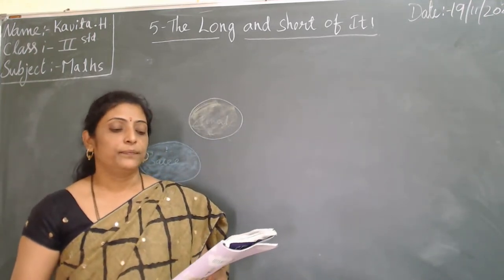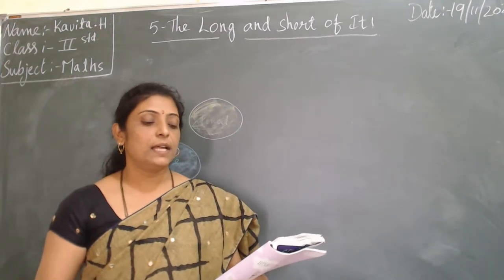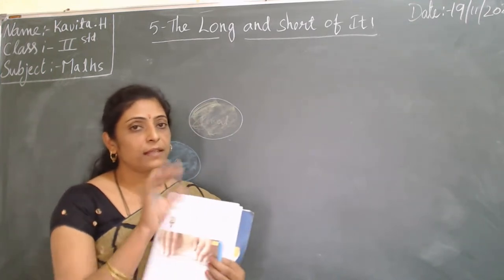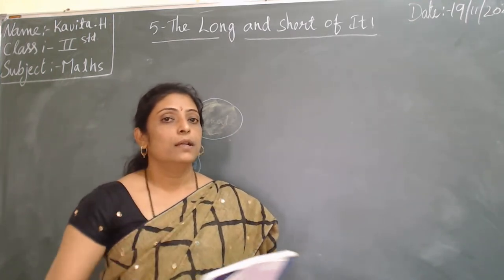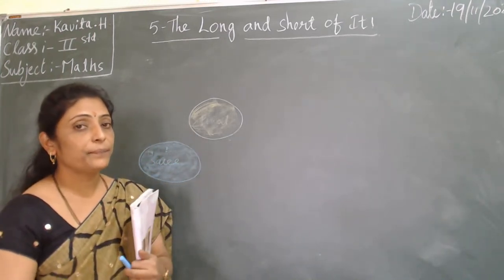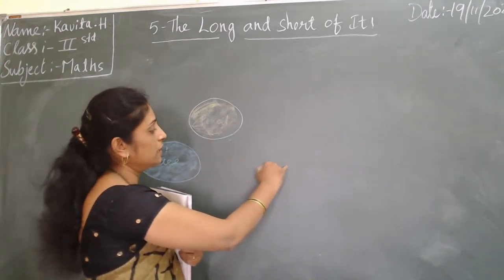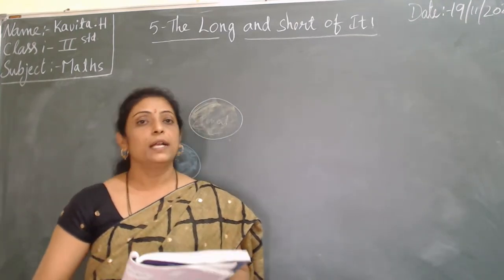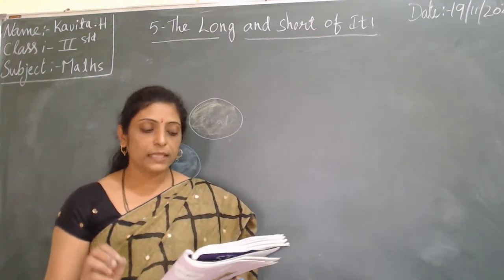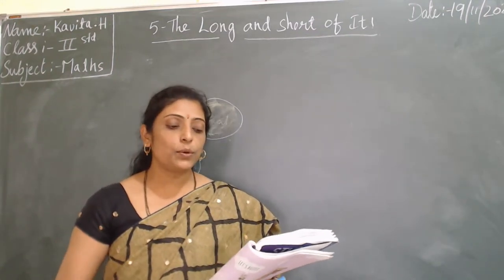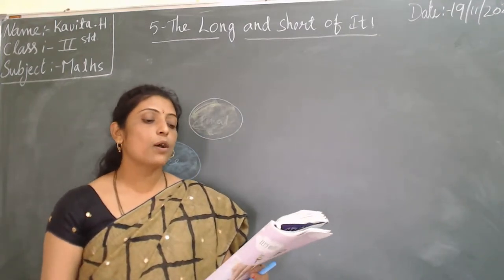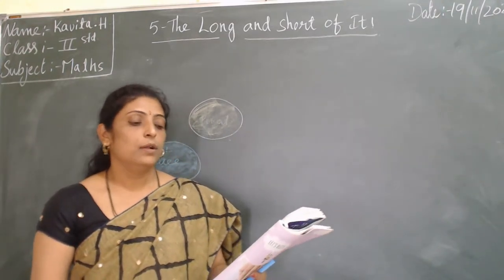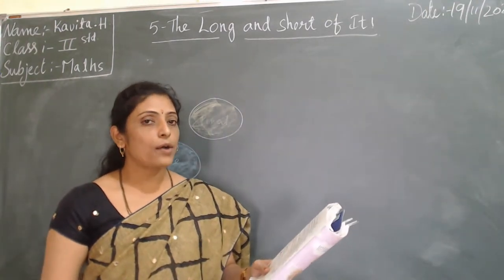Fixed measures are meter and centimeter. When it is not possible to use fixed measures like meter or centimeter, we use measures like hand span, foot span, and cubit. What is hand span? This is called hand span — you can use this hand span to measure the length of table cloth.